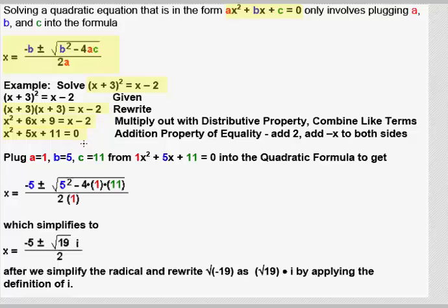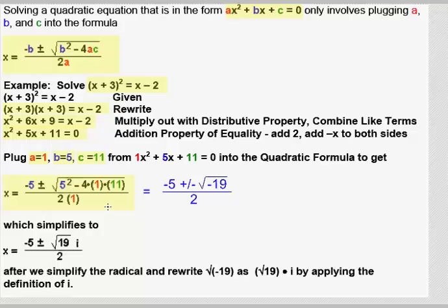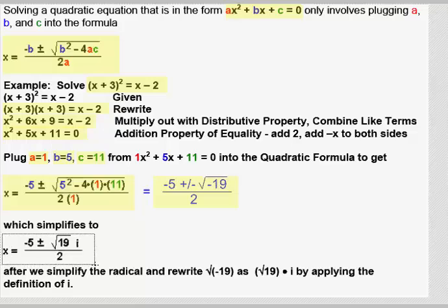Now it's in the standard form. The coefficient on x squared is a = 1, the coefficient on x is b = 5, and the constant term is c = 11. Plugging into the quadratic formula gives x equals negative 5 plus or minus the square root of 5 squared minus 4 times 1 times 11, all over 2. This simplifies to negative 5 plus or minus the square root of negative 19, all over 2. The square root of negative 19 can be written as i√19, so our final answer is x = (−5 ± i√19) / 2.